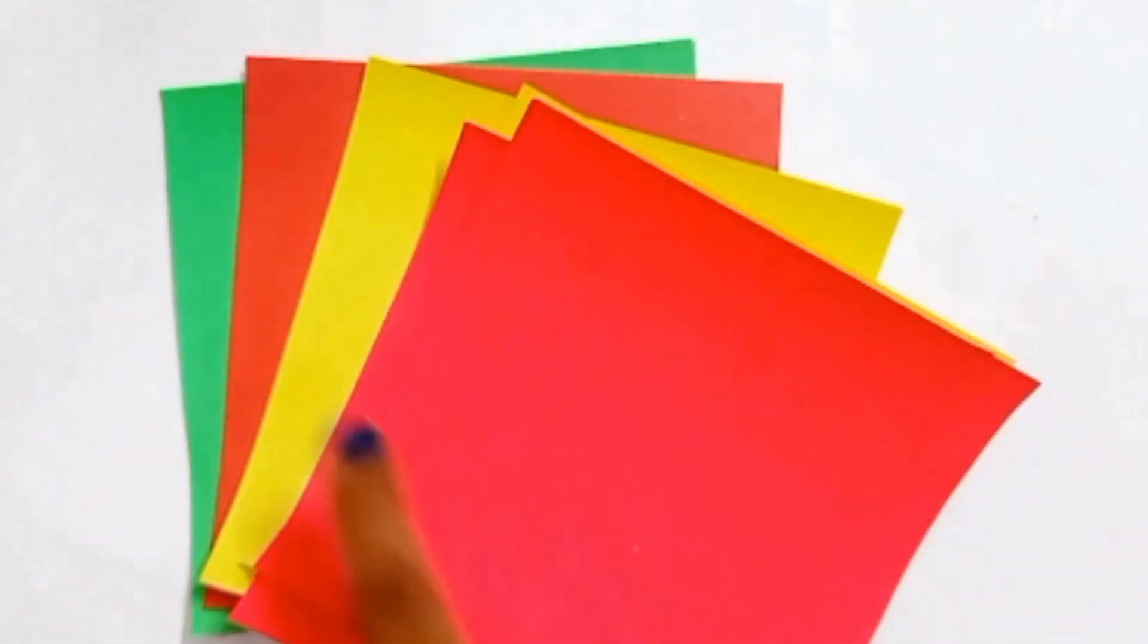To make origami girl's clothes, you need these type of square colorful sheets.